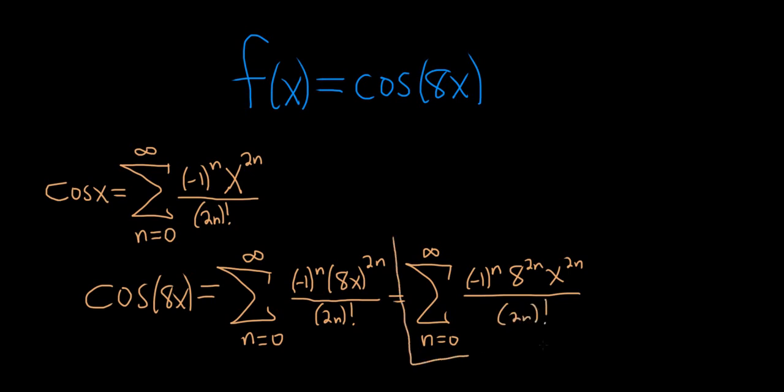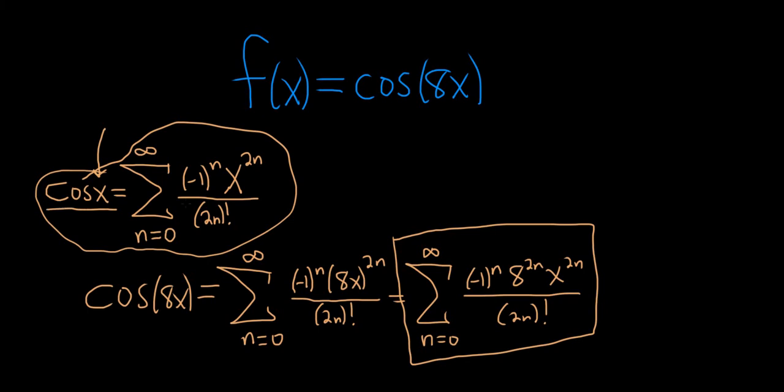And that's it. That's the Maclaurin series for the cosine of 8x. Remember, you can do this because this original Maclaurin series for cosine holds for all values of x. The cosine of x is equal to this infinite sum for every x. In particular, it's true for 8x. We're allowed to just make a straight substitution. So that's the best way to do this problem, because it's the easiest way.